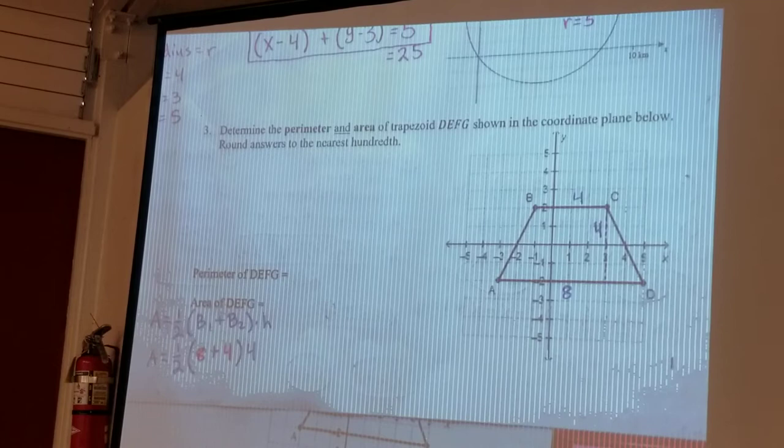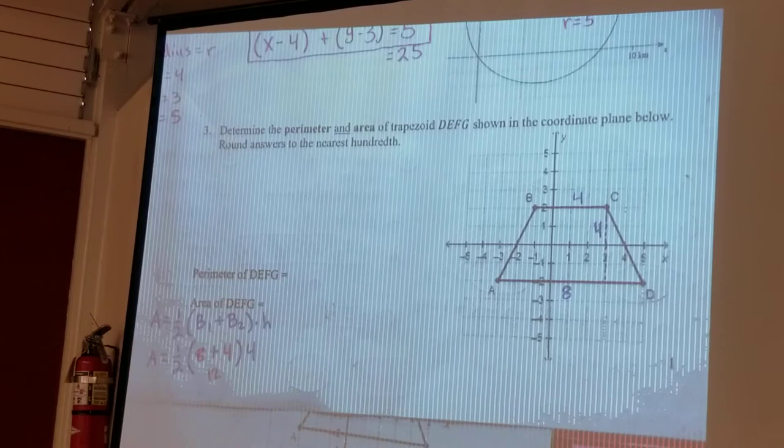Okay, so from there eight plus four is twelve. Twelve times four is forty-eight. Forty-eight times half is twenty-four.